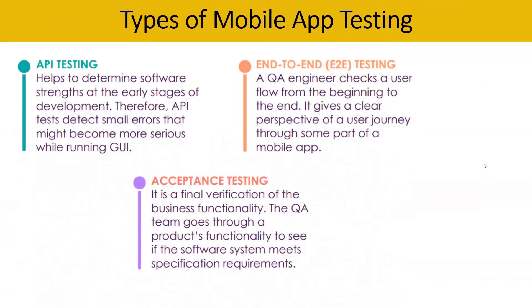You also need to perform API testing, which helps you determine the software's strengths at an early stage of development. API testing detects small errors that might become more serious when running the GUI. One important thing to understand: in API testing, the scope of testing remains towards the back-end — this is not front-end testing.